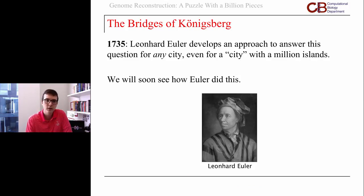Euler wrote back relatively quickly and said yes, I found an approach to answer this question. But his approach was able to answer this question for any city. It didn't have anything to do with Königsberg. It could be generalized for any city, even a city with a million islands. I'm going to explain soon how Euler did this.